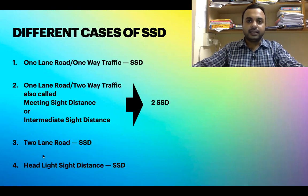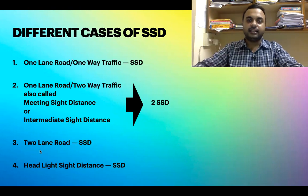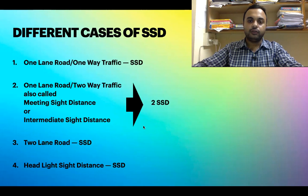The stopping sight distance is also known as headlight sight distance, because during nighttime the headlight of a vehicle should be able to illuminate at least the stopping sight distance — that much vision must be provided by the vehicle's headlights.